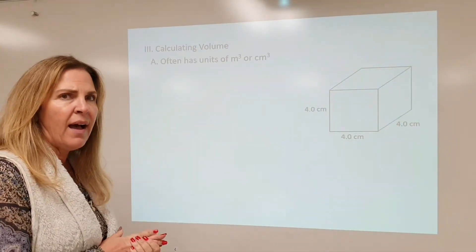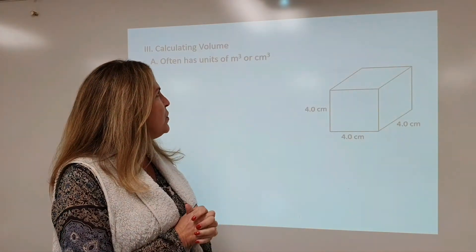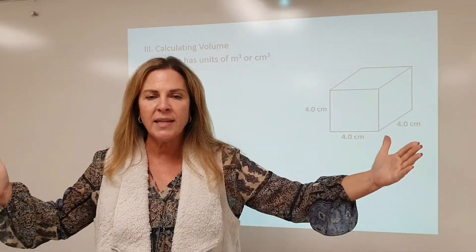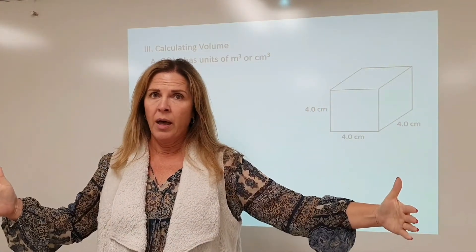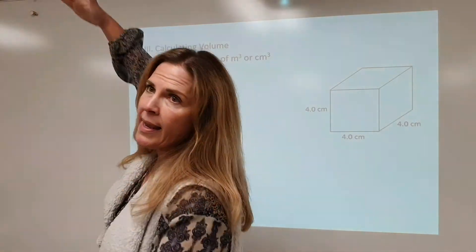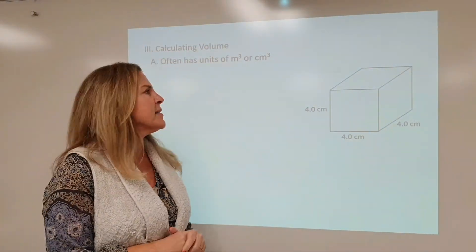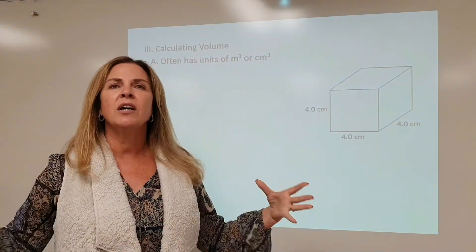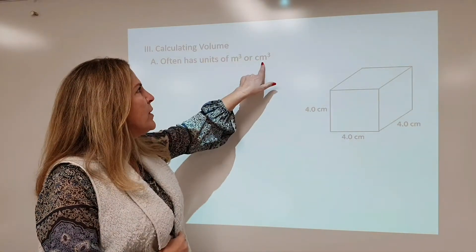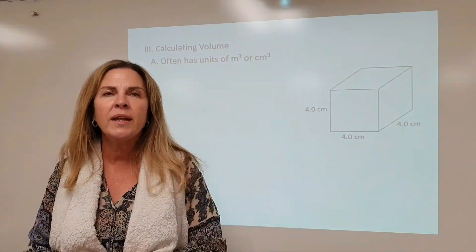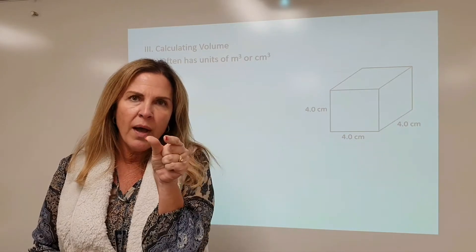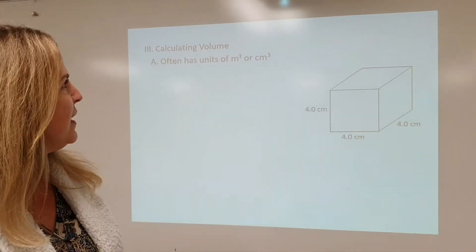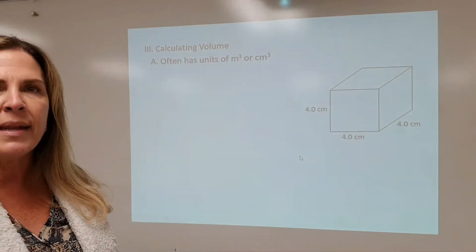The SI — the international system — unit for volume is meters cubed. But if you think about it, that's a box a meter long, a meter wide, and a meter high. That is a ginormous box, and so we don't typically measure volume in such a large amount. Instead, we're going to use a smaller unit: centimeters cubed — a centimeter long, a centimeter high, and a centimeter wide. That is definitely a smaller, more manageable unit.